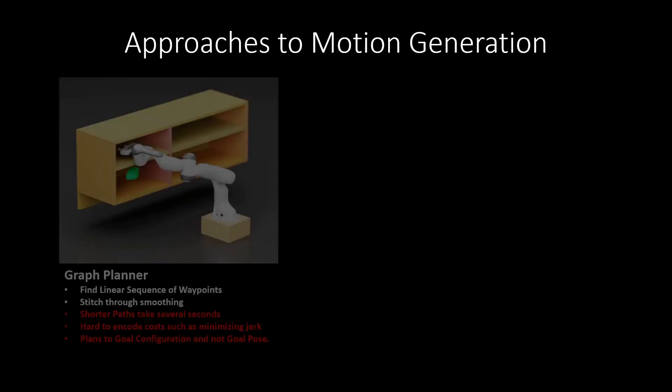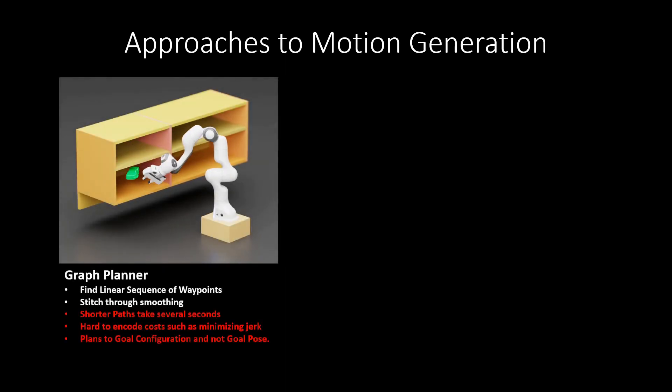We have seen two main ways to generate collision-free motions. First, using a graph planner, which will give us a linear sequence of collision-free waypoints that can then be smoothed. However, getting the shortest path from a graph planner can take several seconds. It's also hard to encode costs such as minimum jerk.